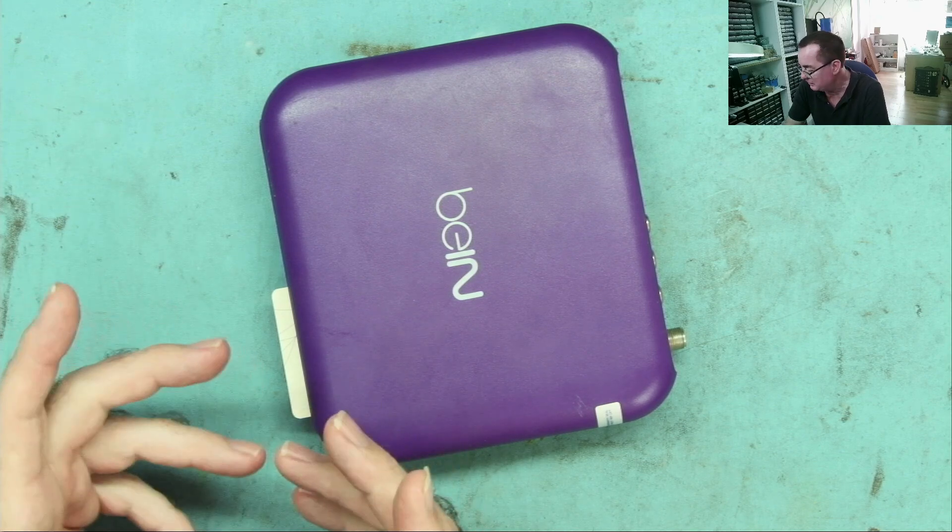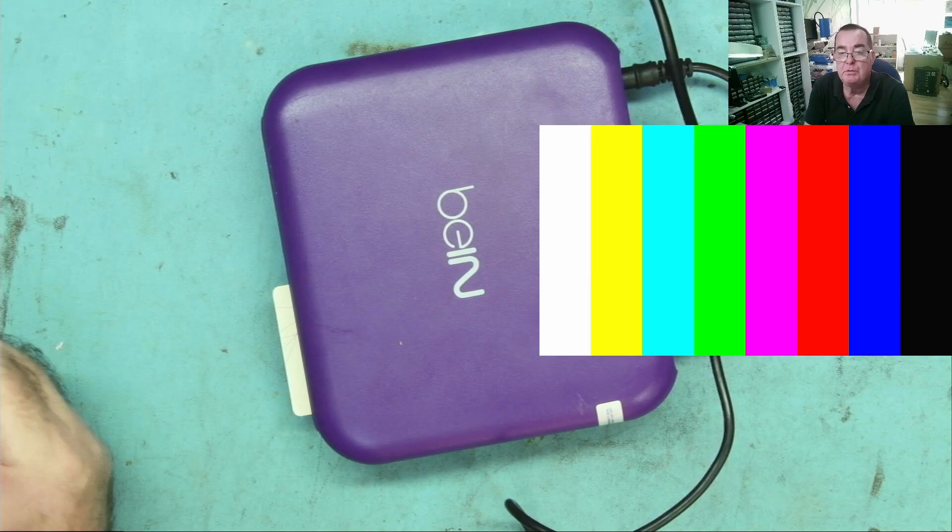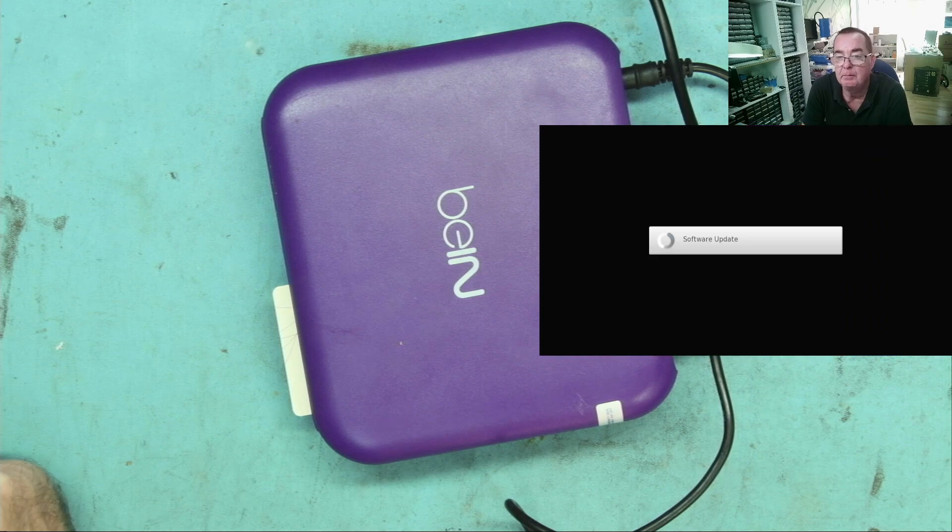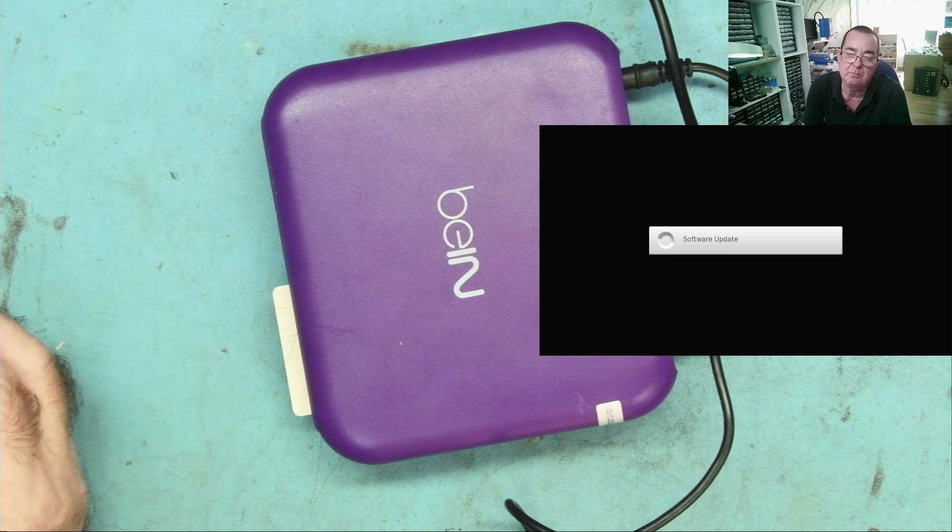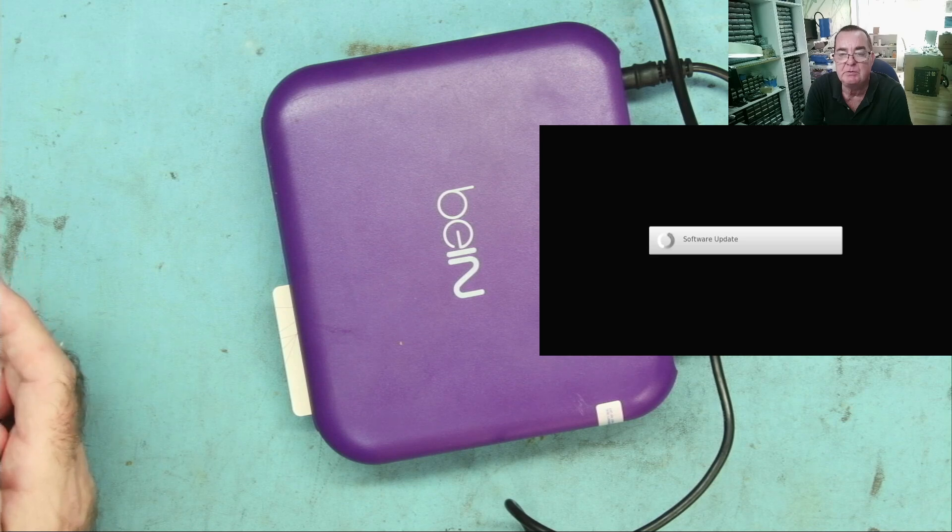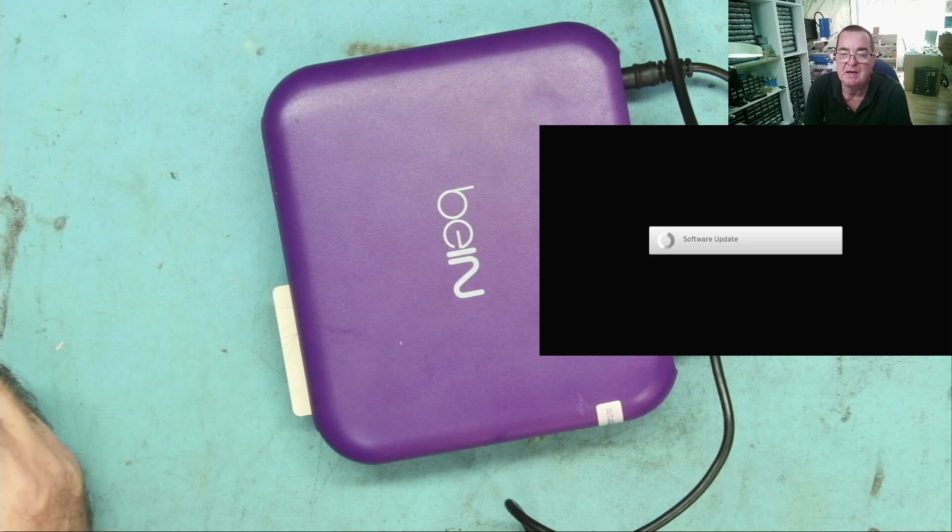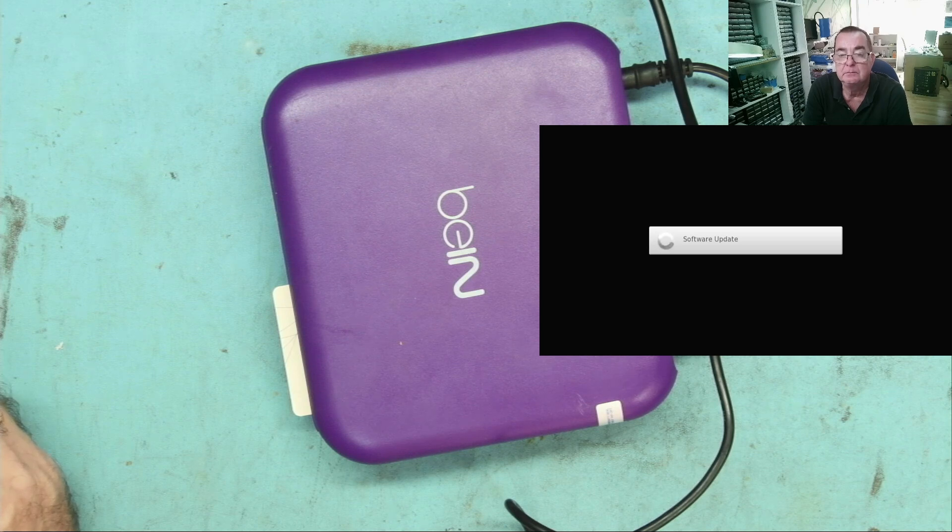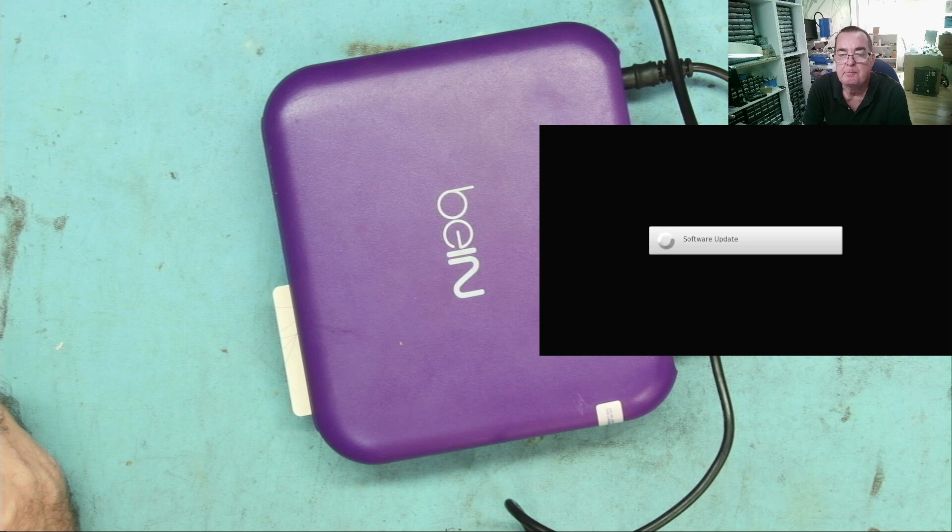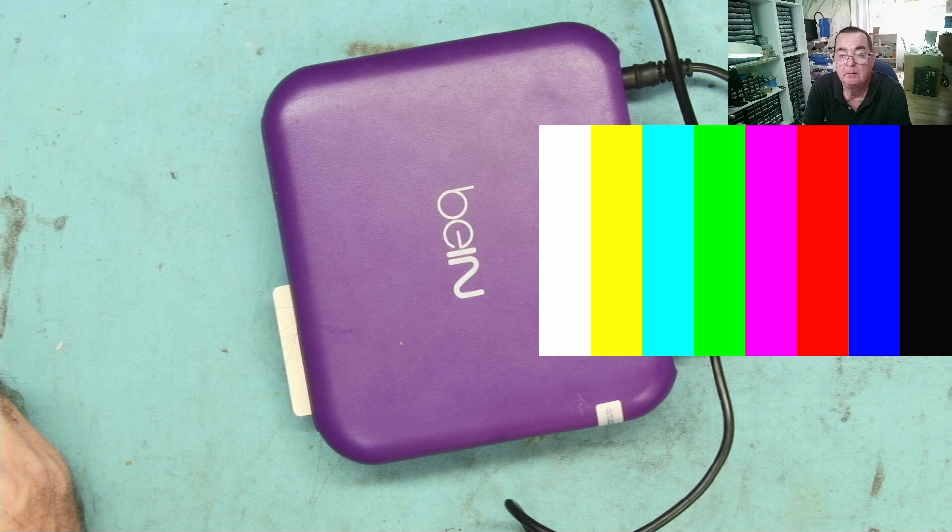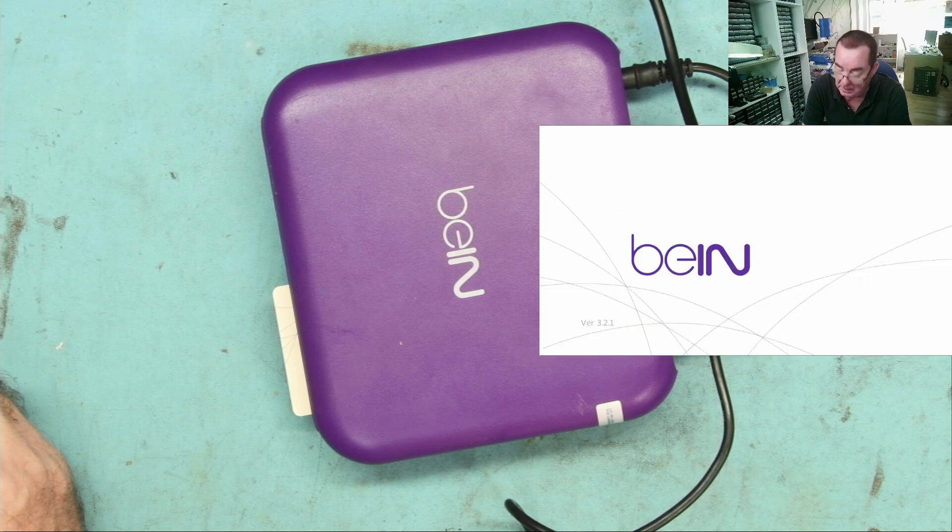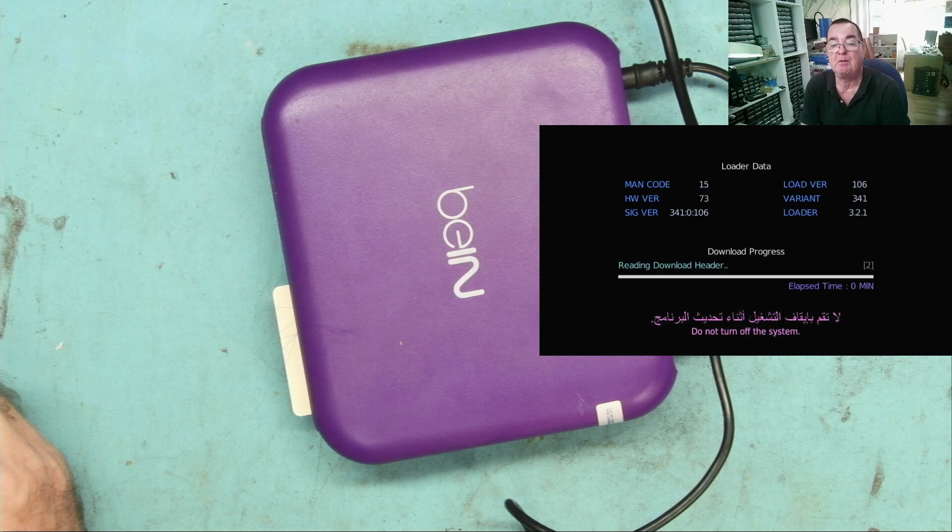So the first thing I'll do is connect it up to the dish and see what it's doing. The box is booting up. They always say software update, but if they do a software update they then tell you. It's not actually doing a software update at the moment, it's just looking to see if there's a later version of firmware to download from the satellite.